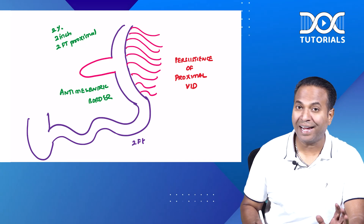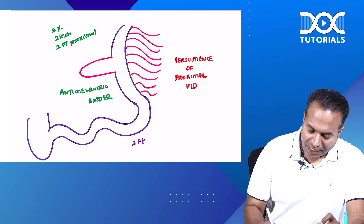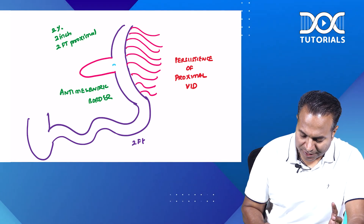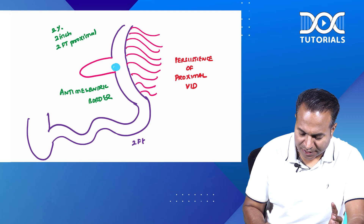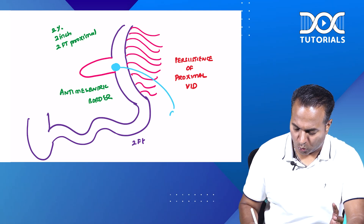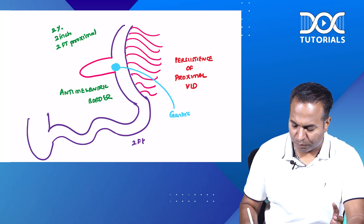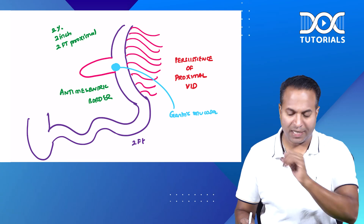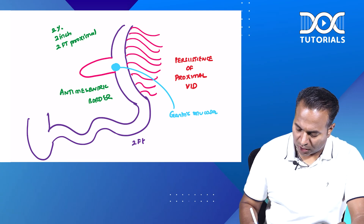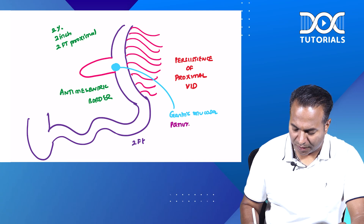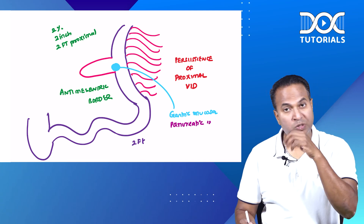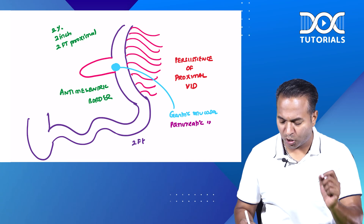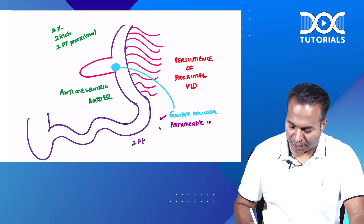It is found on the anti-mesenteric border, and it contains two important ectopic mucosas. The first and most common is gastric mucosa, which is found not inside Meckel's but in the adjacent ileum. The second most common is pancreatic mucosa.